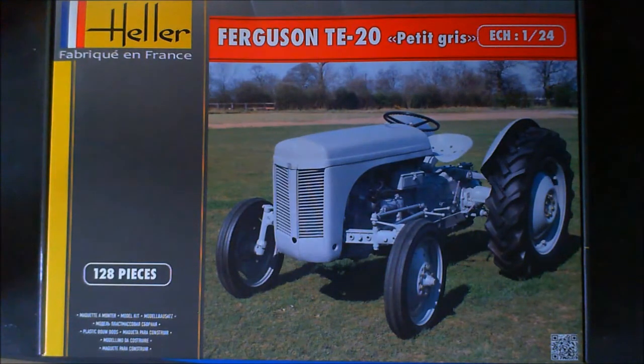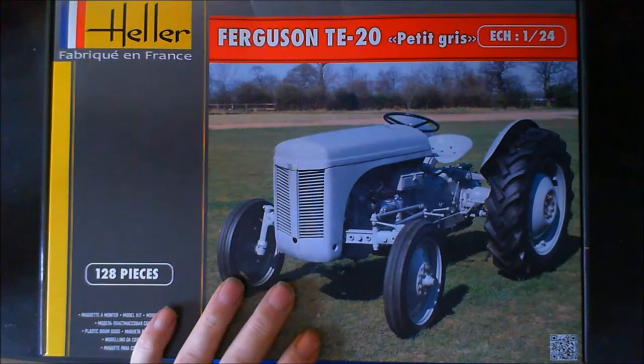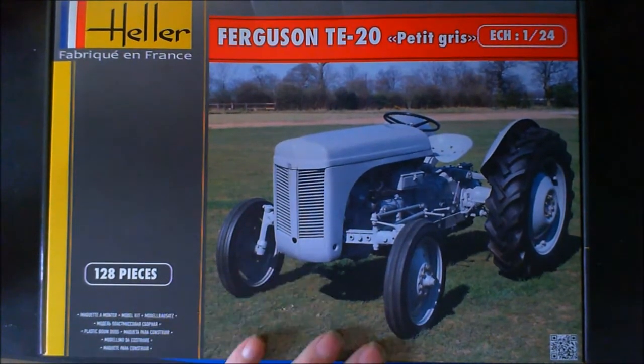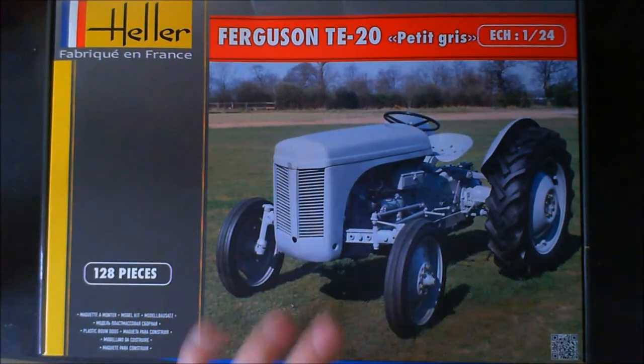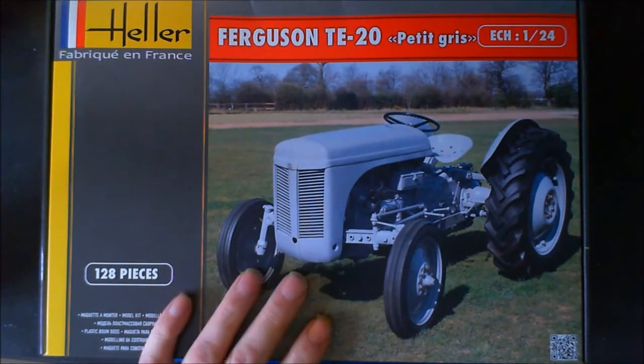Ferguson, Harry Ferguson it was, born 1884, not 1984. That won't make him that old, will it? Now, he was born in Ireland, his family were farmers, and he designed this, the three-point linkage.